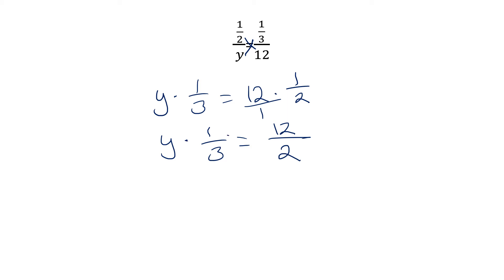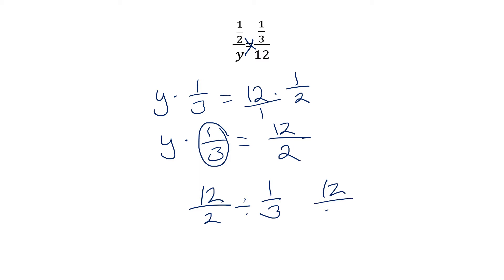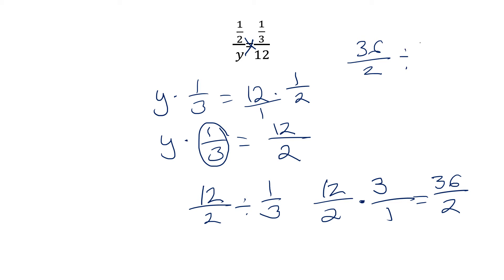The next step is to divide by whatever number is multiplied to y. So we'll have 12 over 2 divided by one-third. Hopefully you remember from the fractions lecture your copy-dot-flop. So 12 over 2 times 3 over 1. 12 times 3 is 36, 2 times 1 is 2, giving 36 over 2. We can reduce by dividing top and bottom by 2: 36 divided by 2 is 18. So y equals 18.